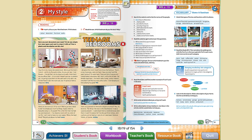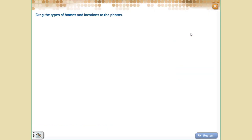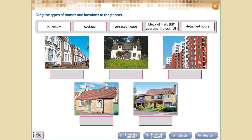When you finish the text comprehension, we are going to start our vocabulary. In our vocabulary, we talk about home and furniture. Exercise 9 — we have some different types of homes, different types of houses. Some of them we have here in Brazil and some of them are typical in England. We have bungalow, cottage, terraced house, block of flats, apartment, and detached house.